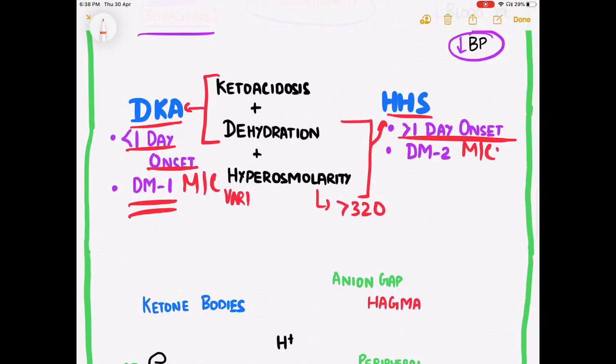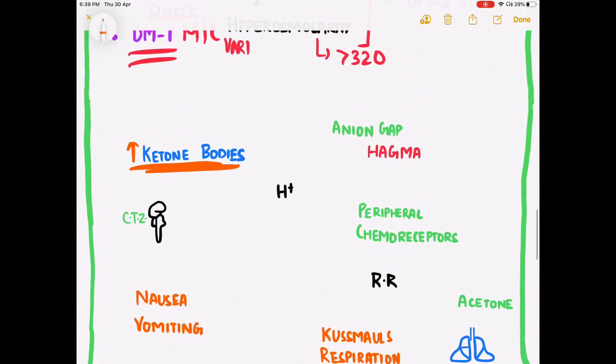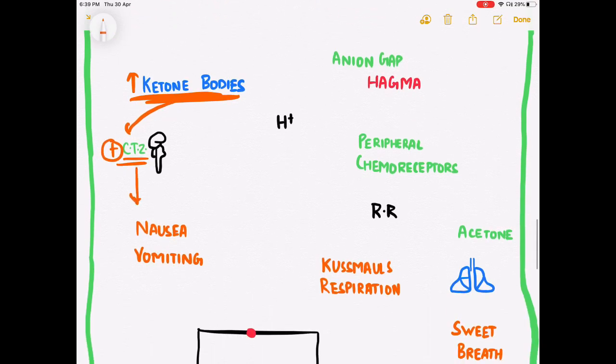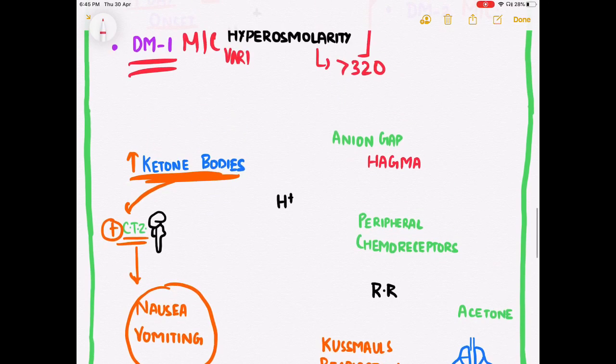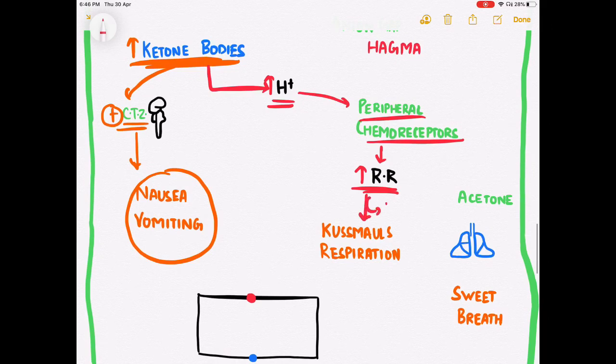Now let us see how these excessive ketone bodies cause other manifestations of diabetic ketoacidosis. These excessive ketone bodies trigger the chemoreceptor trigger zone present in the brain and cause the manifestations of nausea and vomiting. Since the ketone bodies are acidic in nature, they give away free proton ions. These excessive proton ions stimulate the peripheral chemoreceptors present in the body, such as aortic bodies and carotid bodies. They send impulses to the CNS and increase the respiratory rate so that more CO2 can be expired out of the body and acidity is taken down. This causes the major manifestation of DKA, which is Kussmaul respiration.